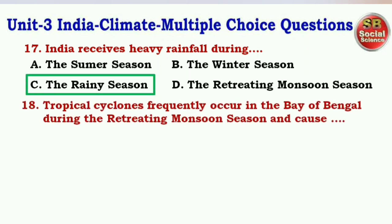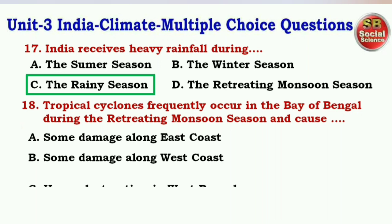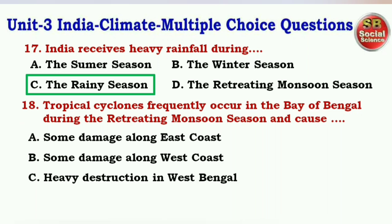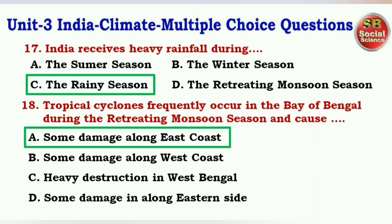Next question: Tropical cyclones frequently occur in the Bay of Bengal during the retreating monsoon season and cause — options are some damage along East Coast, some damage along West Coast, heavy destruction in West Bengal, some damage along Eastern Side. The right answer is option A — some damage along East Coast.